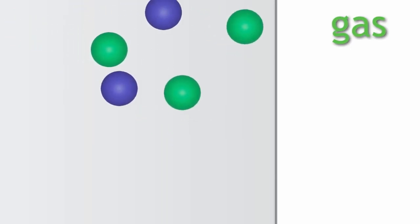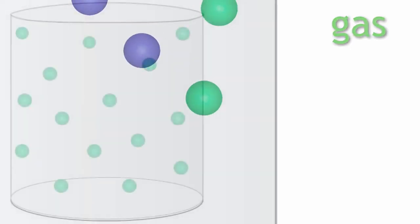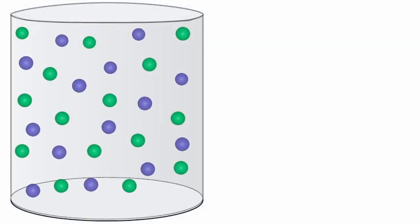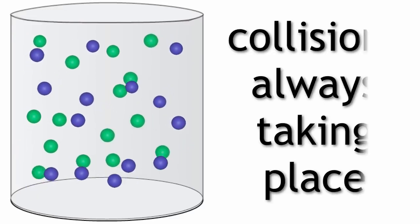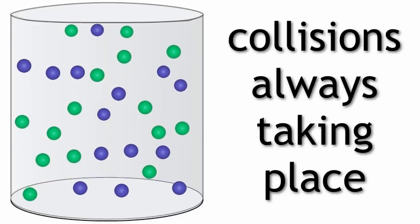Well, just as the gas particles can hit the walls of a container and rebound, the particles can also hit each other. It doesn't matter if there is only a single gas or a mixture of gases. These collisions between particles are always taking place.